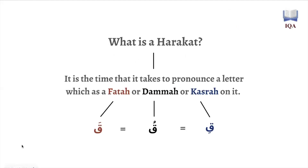That is what's meant in the science of tajweed when they say a letter is going to be elongated two harakahs, four harakahs, or six harakahs. When I say six harakahs, it means the length it will take for you to pronounce the letter six times with that harakah on it. For example, in 'ghayr al-maghdoobi alayhim wa laal-dallin,' the daal there is being elongated six harakah — that's how long you elongate the daal. So that's what harakah means in the context of mudood, whether it's two harakahs or four harakahs.